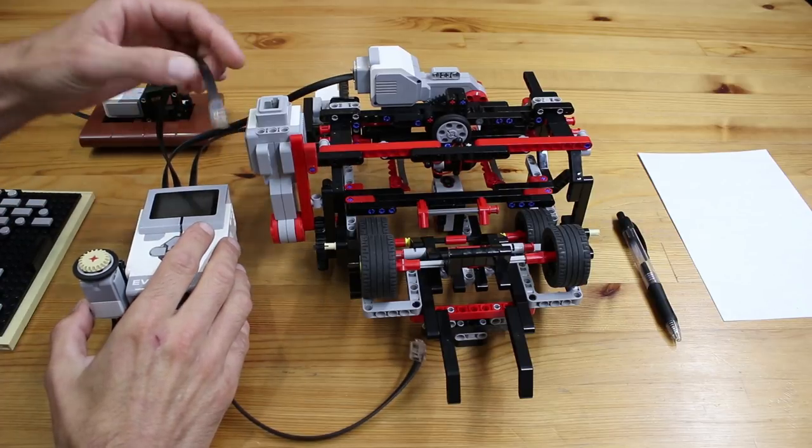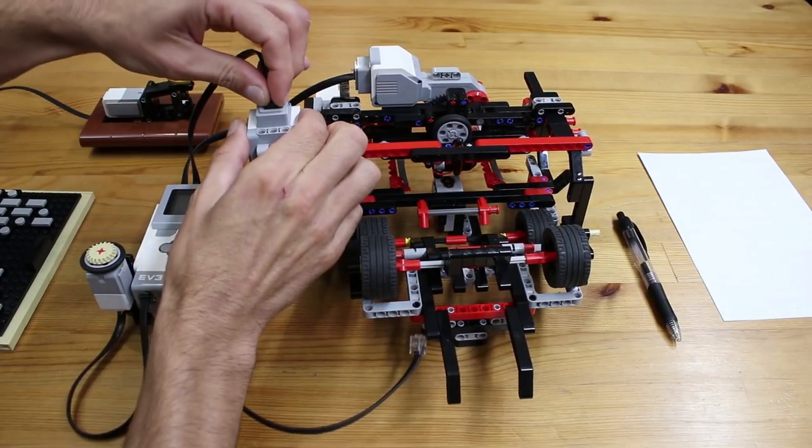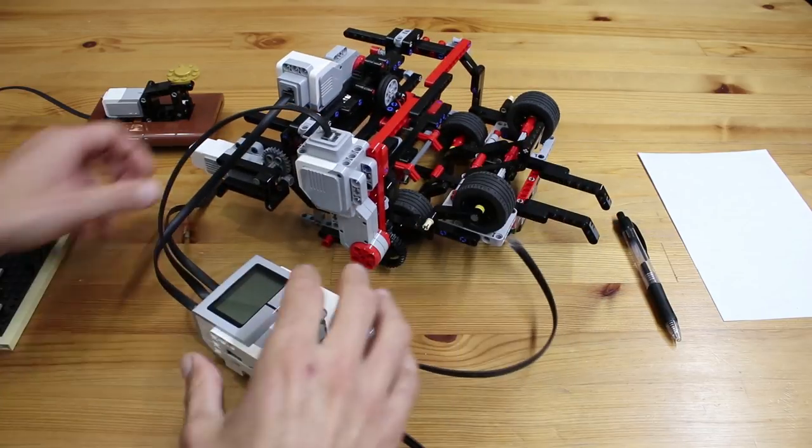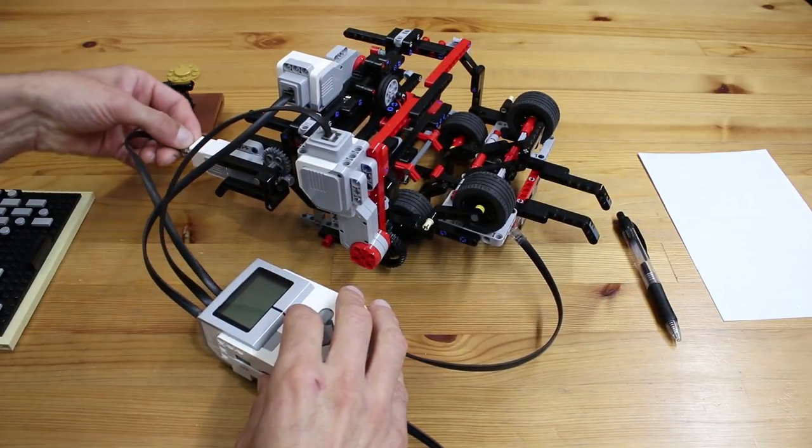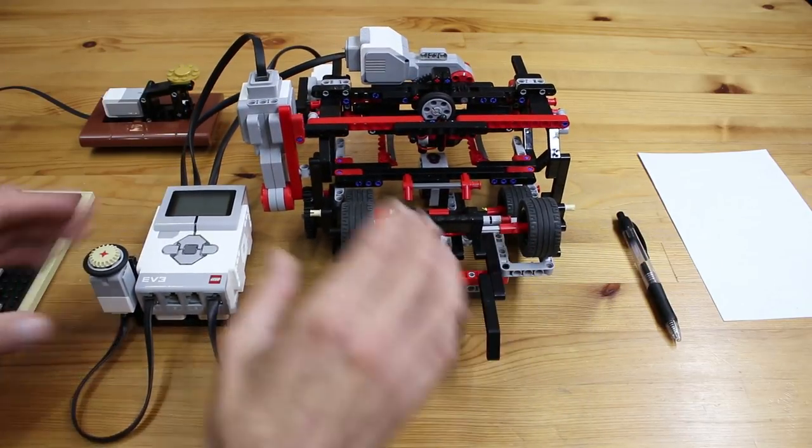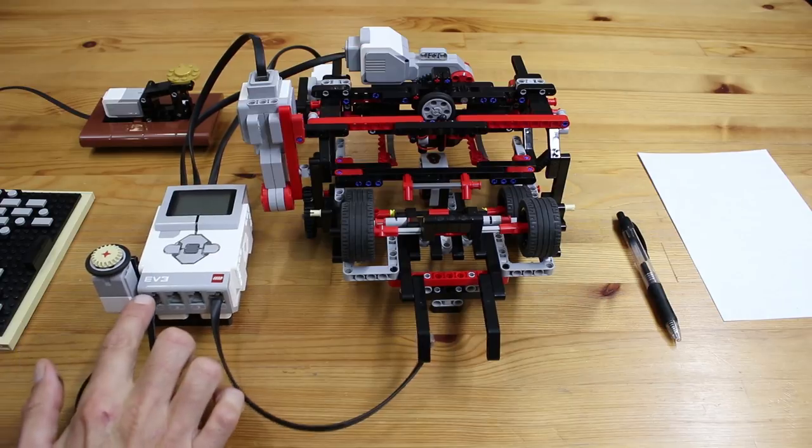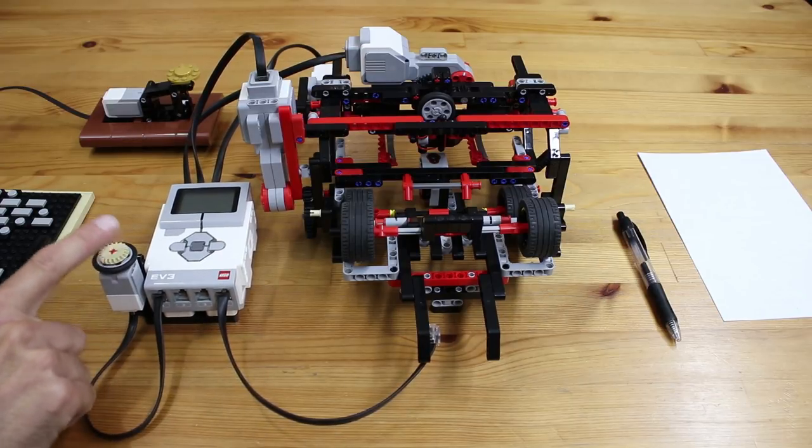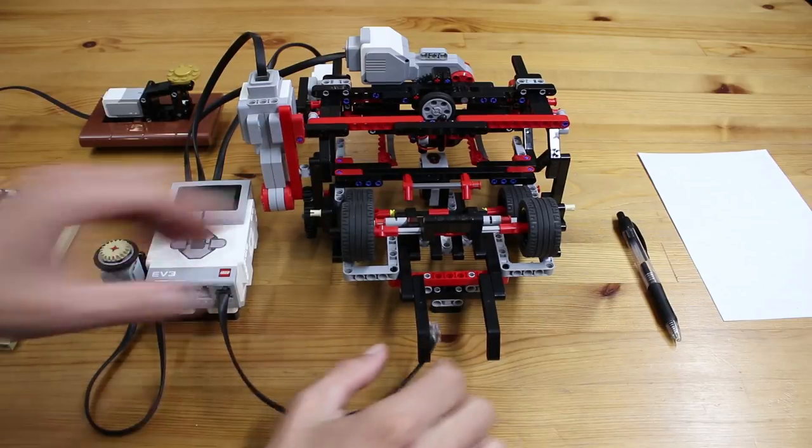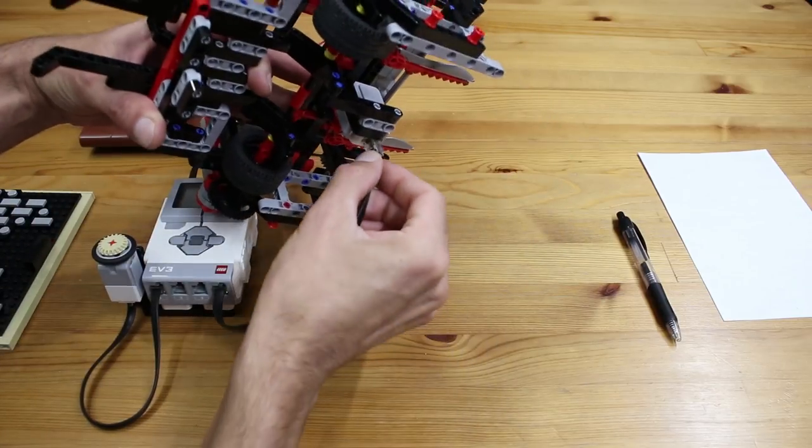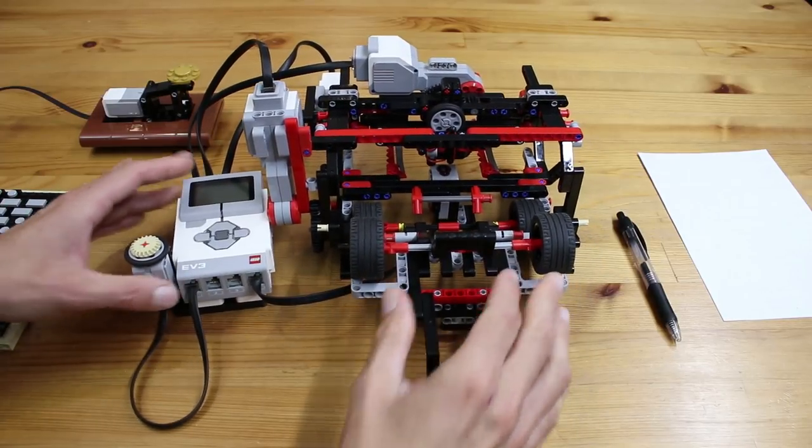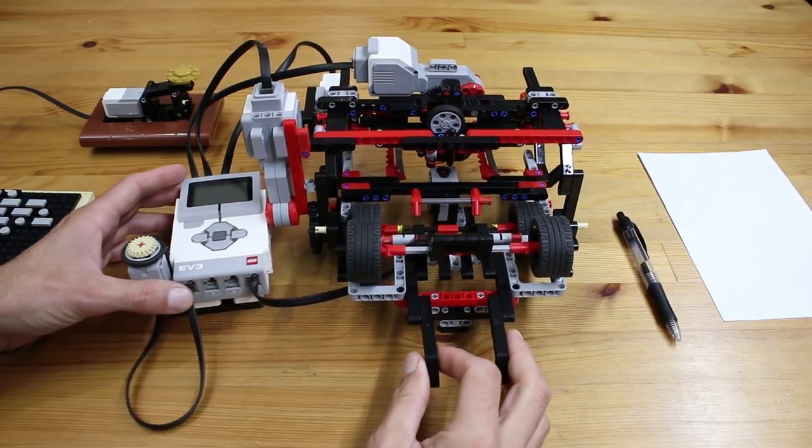Motor port B is connected to this large motor on the side which controls feeding the paper in and out, and motor port C is connected to the M motor at the back which controls raising and lowering the pen. Sensor port 1 is connected to the touch sensor where we'll tap out our Morse code, and sensor port 4 gets connected to the color sensor underneath which will detect when the paper has been fed into the machine.